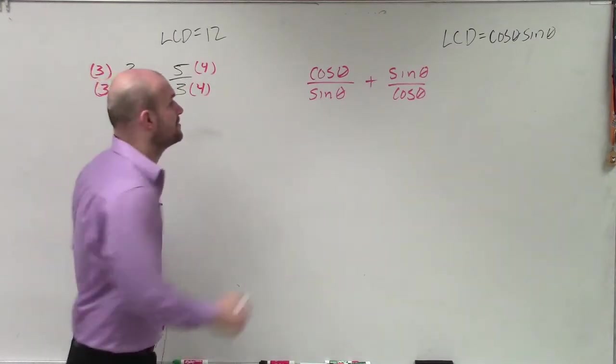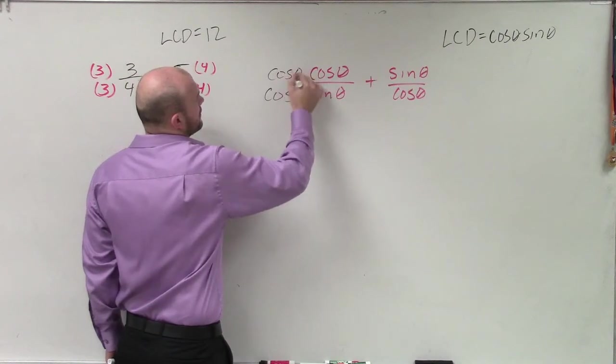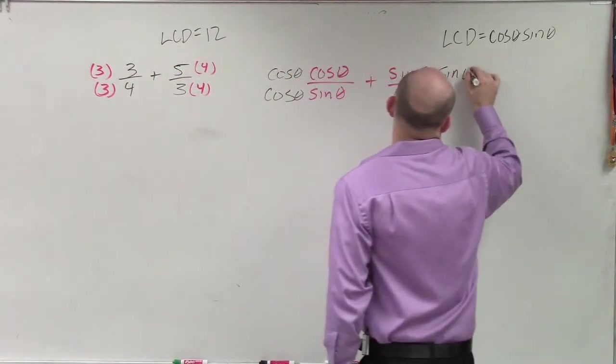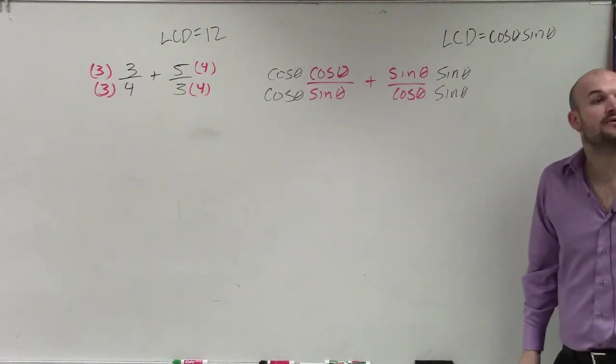So therefore, to get my common denominator, I need to multiply cosine of theta on the left side and sine of theta on the right side. So I'm just multiplying them on the left and on the right.